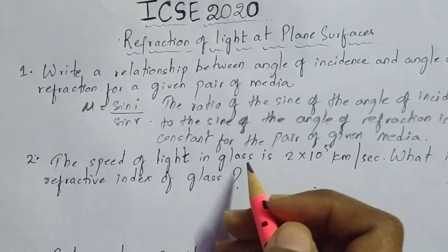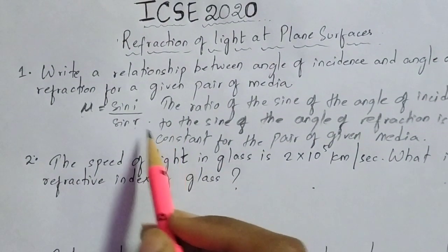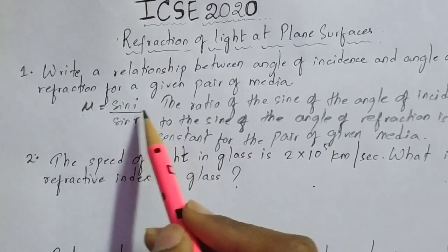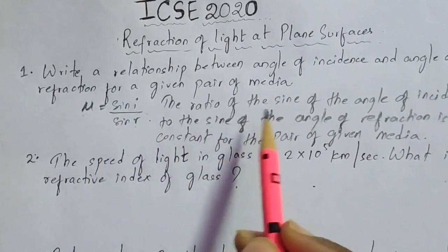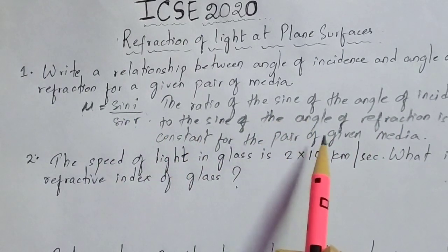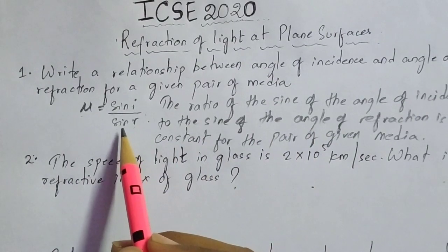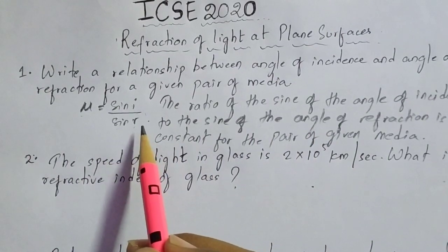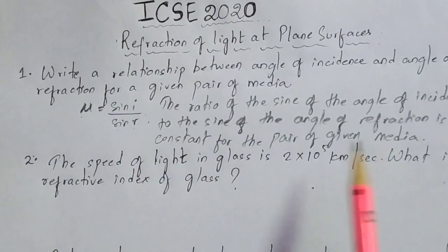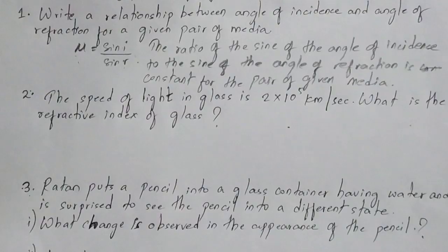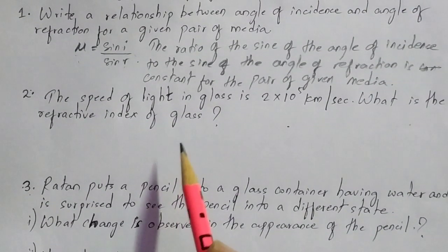This second law states that the ratio of sin i divided by sin r is constant, and this constant is called the refractive index. Now moving on to the next question, which is a numerical type of question.